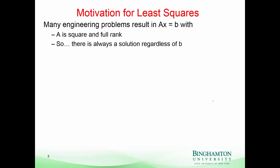What is it that we're trying to do here? A lot of engineering problems, we get a system of equations to solve — AX equals B — and the matrix A is square and full rank. We've already seen that in that case, B cannot be outside of the column space of A, because the column space of A is the full space. So any B will result in a solution.